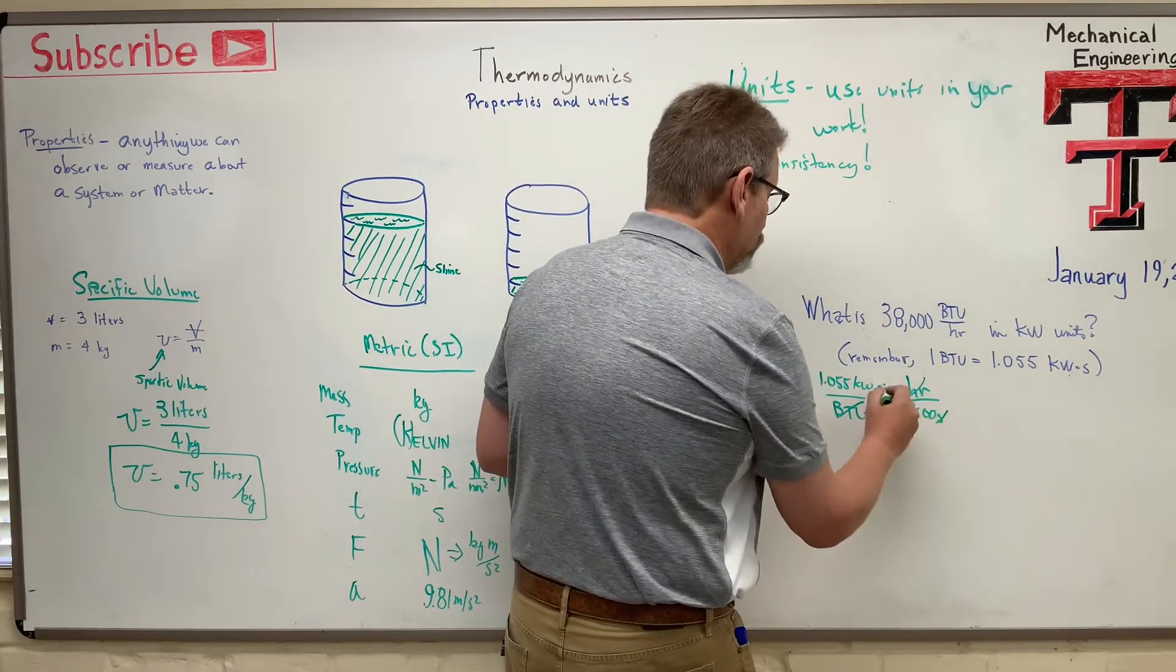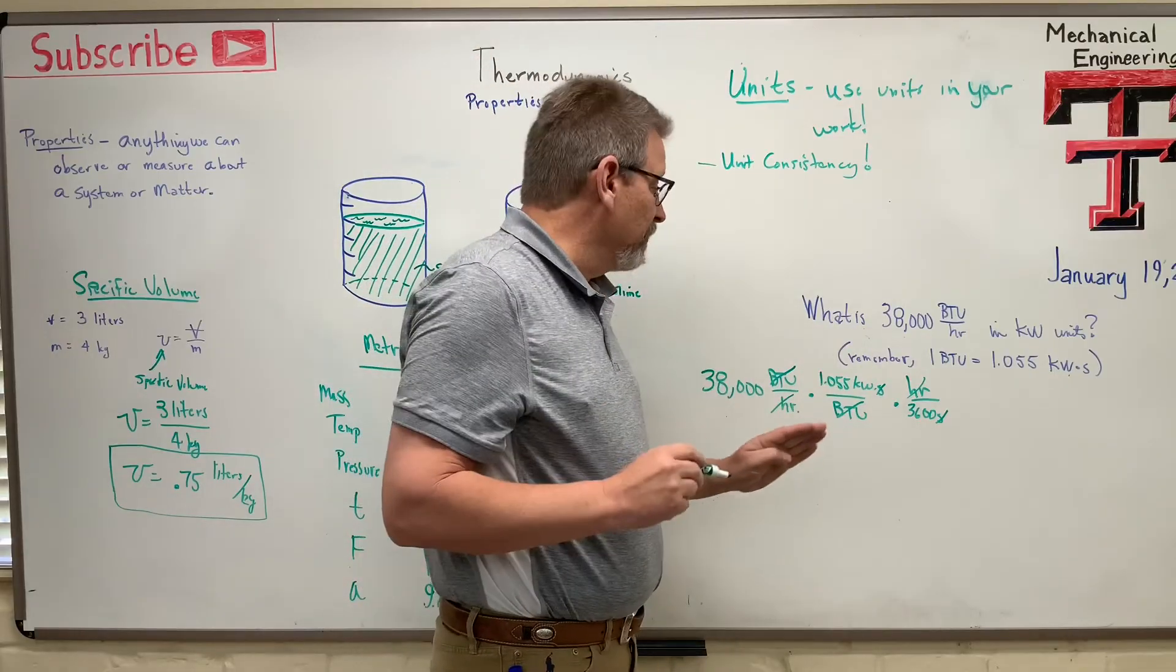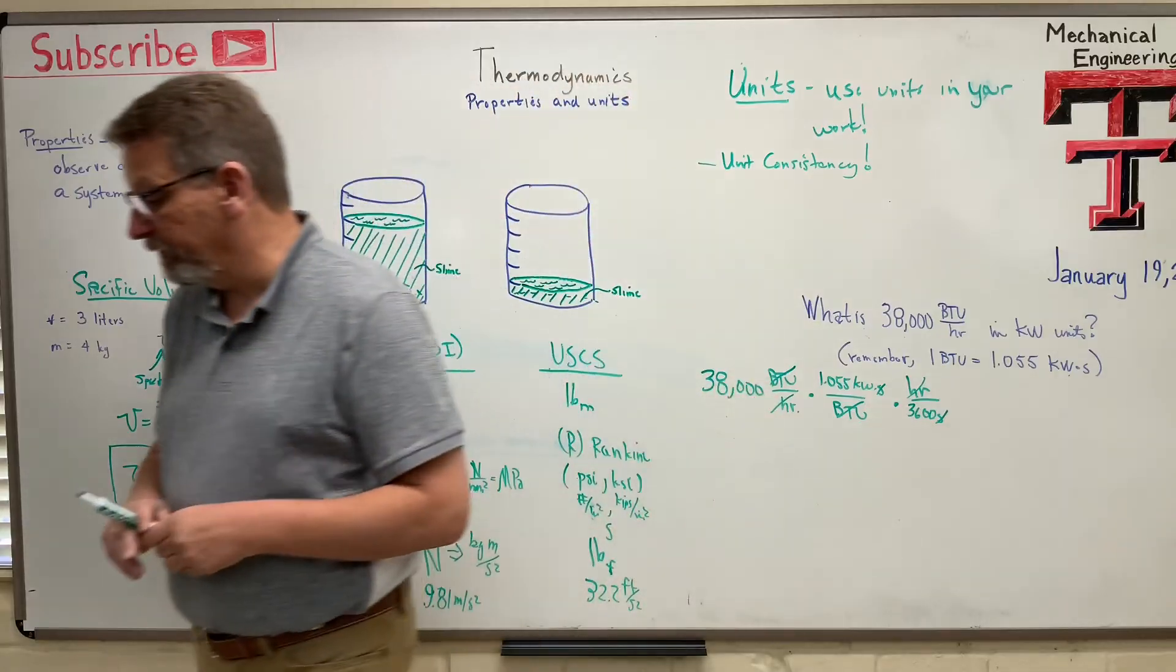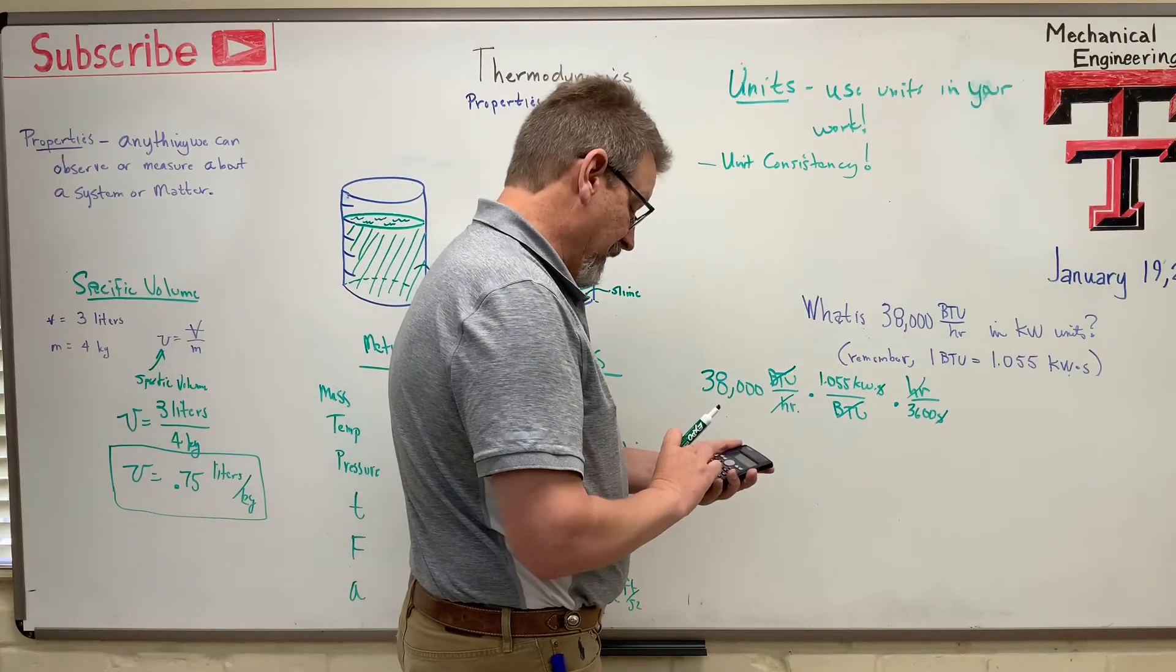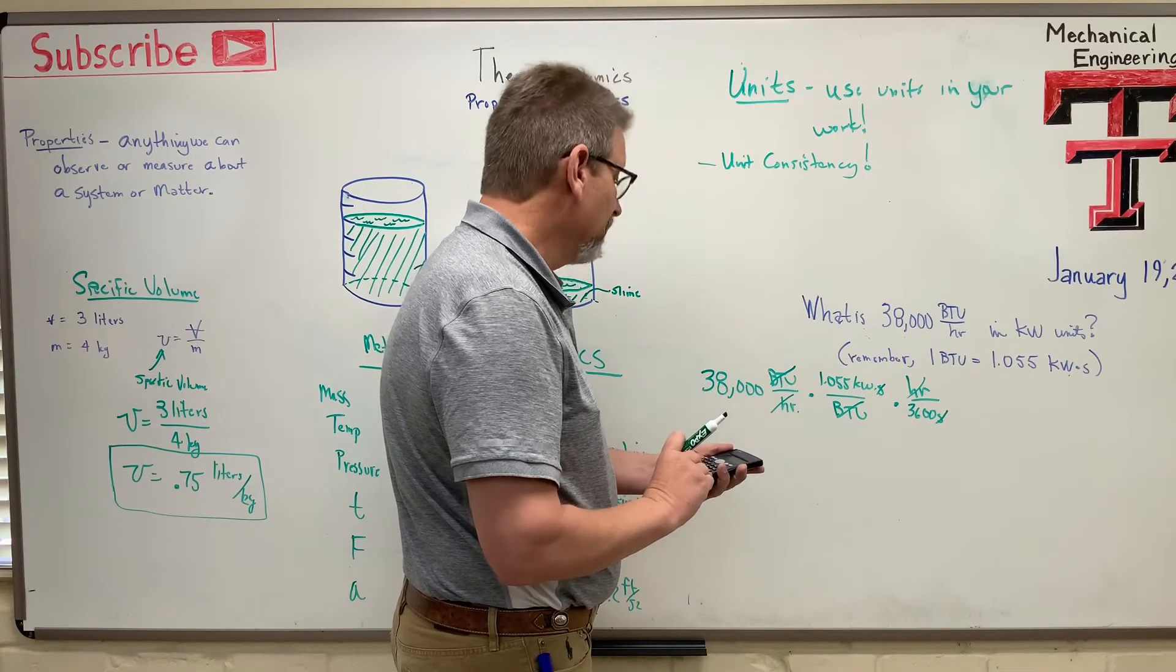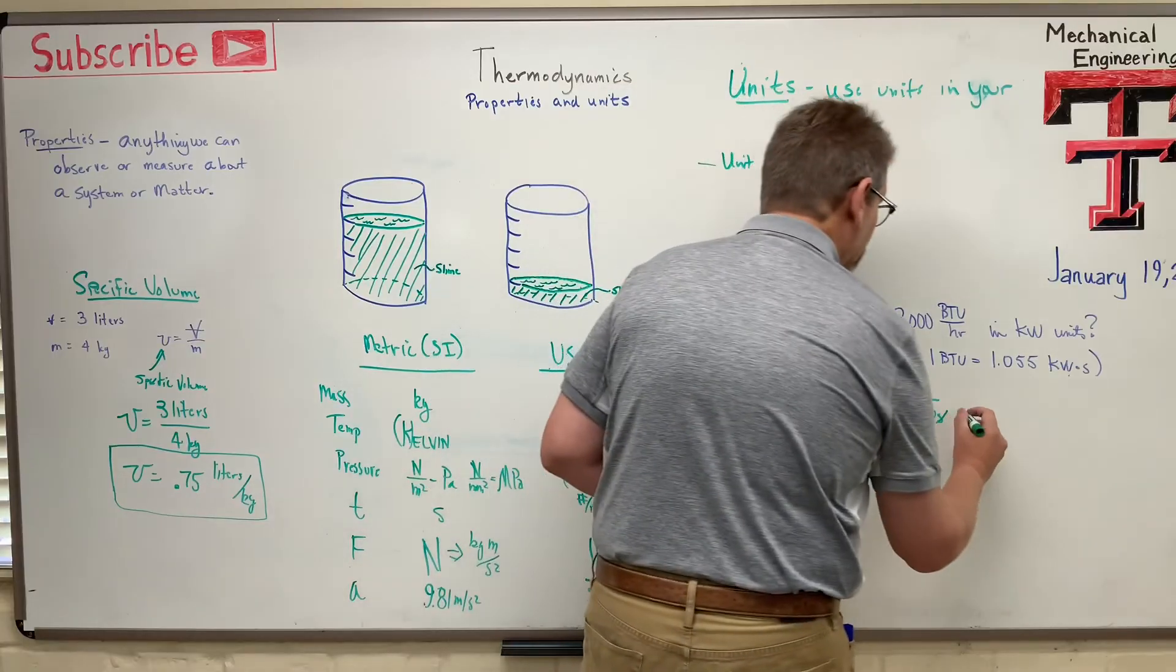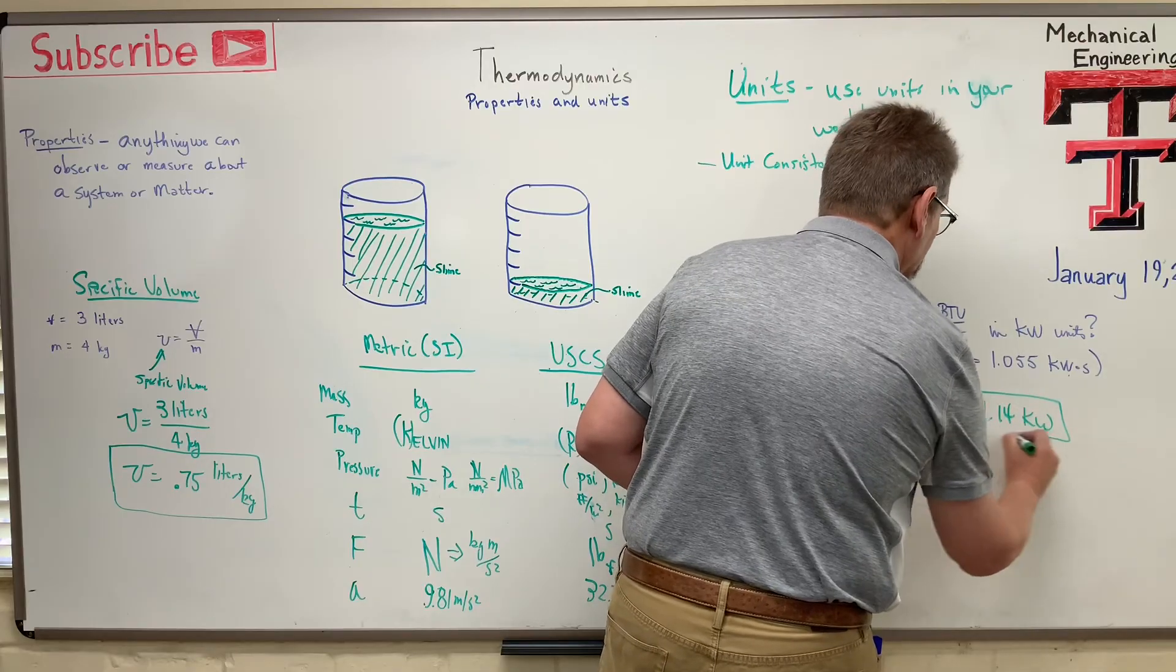And now I'm going to have what? My seconds are going to cancel out. And it's going to leave me with just kilowatts, isn't it? So I have written every unit and crossed out every unit. And I am sure that if I take 38,000, multiply by 1.055, and then divide that whole thing by 3,600, that I'm going to get the answer. Where's my calculator? Okay? So here we go. So on 38, one, two, three, times 1.055, divided by 3,600, equals 11.14, okay? 11.14 kilowatts. And that would be the answer.